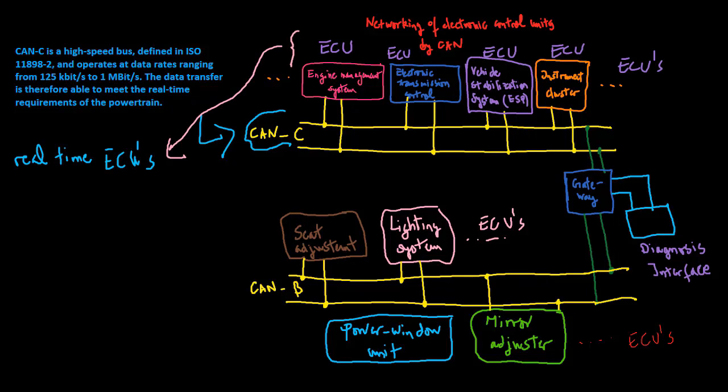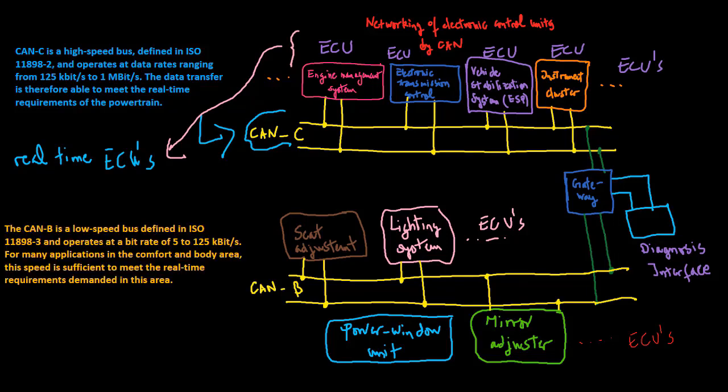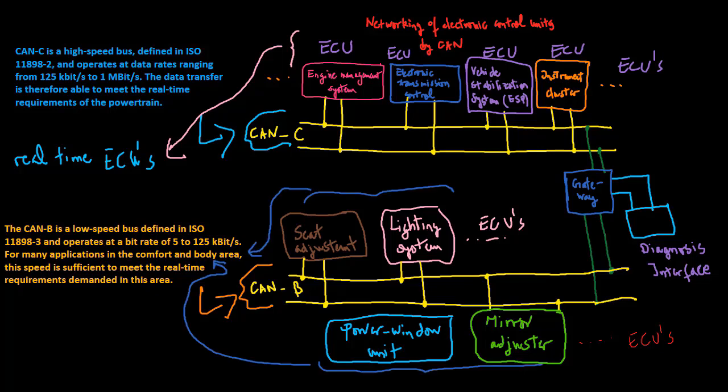The data transfer is therefore able to meet the real-time requirements of the powertrain. The CAN-B is a low-speed bus, defined in ISO 11898-3, and operates at a bit-rate of 5 to 125 kbps. For many applications in the comfort and body area, this speed is sufficient to meet the real-time requirements demanded in this area.